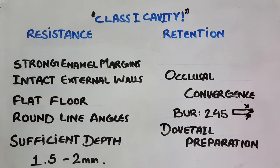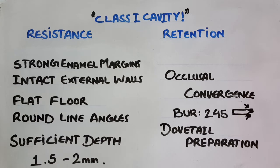Other features of resistance form include a flat floor with rounded line angles, so that there is no point of stress concentration at a sharp line angle, and a sufficient depth — in the case of an amalgam filling, that is about 1.5 to 2 millimeters.